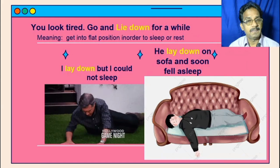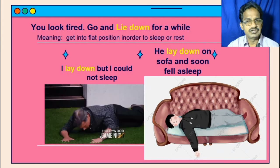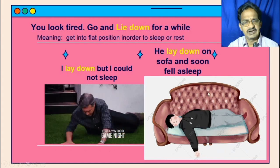You look tired — go and lie down for a while. He is lying down for a while. 'Lie down' means get into a flat position in order to sleep or rest. He is taking rest because he was tired. 'Lie down' is the present base form, whereas its past form is 'lay' — past form is lay, lain. We can use: 'I lay down but I could not sleep.' Another picture shows he lay down on the sofa and fell asleep. 'Lie' is the base form and it follows the preposition 'down.'